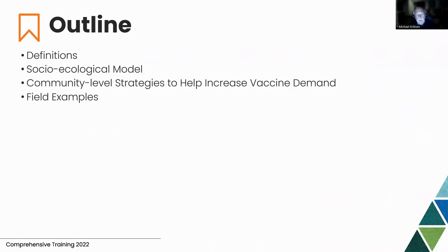We want to begin with some definitions around things you've already heard about, particularly talking about the social-ecological model and what can be done at the community level. I'll provide examples from our work with refugees in the Atlanta area, and that'll be followed by a report from the University of Rochester on some of their community-based strategies.